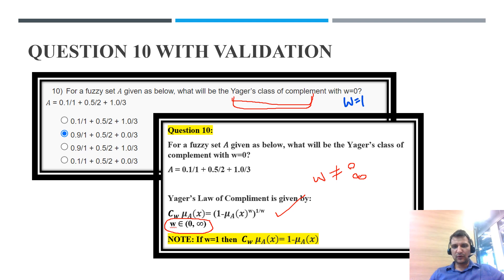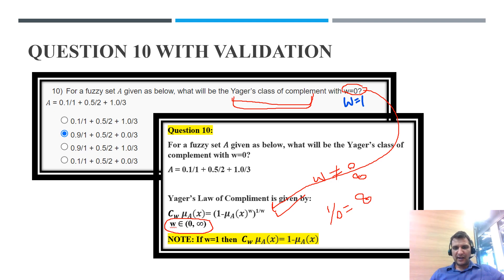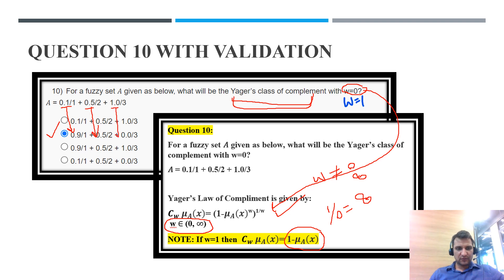When W equals 0, putting it into the formula gives 1/W = 1/0, which becomes infinity — so it is not possible to evaluate. Therefore I am considering W equal to 1 instead. When W equals 1, the formula becomes simply 1 minus μ_A(x), meaning we take the standard complement. So the complement of 0.1 is 0.9, the complement of 0.5 is 0.5, and the complement of 1 is 0. Therefore option B is the correct answer.